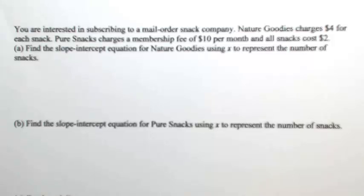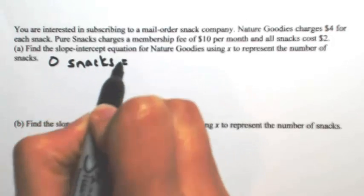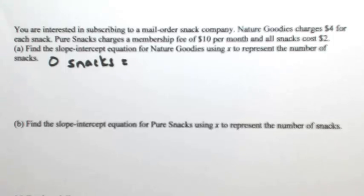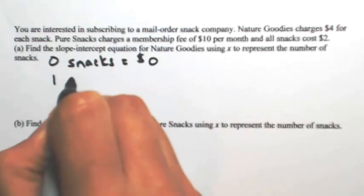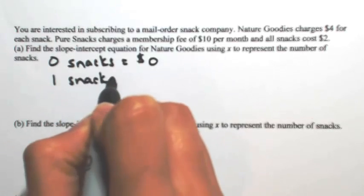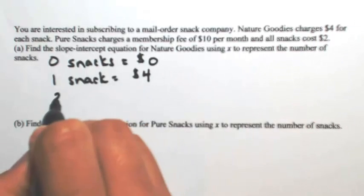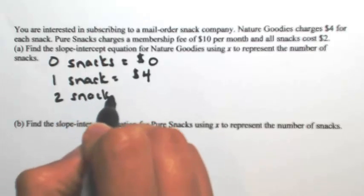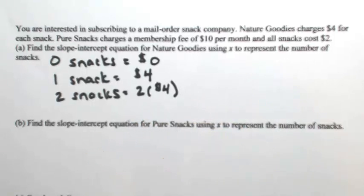Find a slope-intercept equation for Nature Goodies using x to represent the number of snacks. So to figure out the slope-intercept equation, let's do a couple scenarios. Let's say that you buy zero snacks. With Nature Goodies, there is no fee, so if you don't buy anything, you're not going to be charged anything. If you buy one snack, Nature Goodies charges $4 for each snack, so that's going to cost you $4. If you buy two snacks, then that's going to be 2 times 4, and so on.